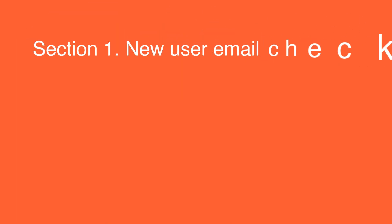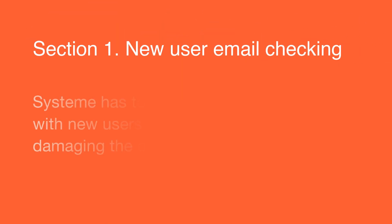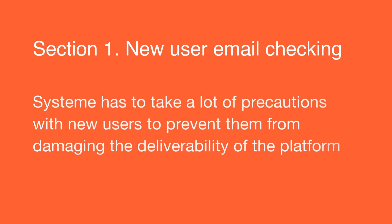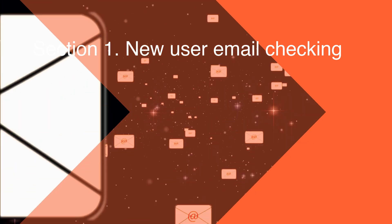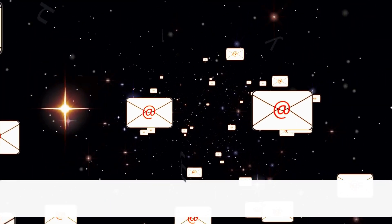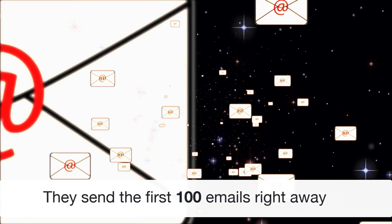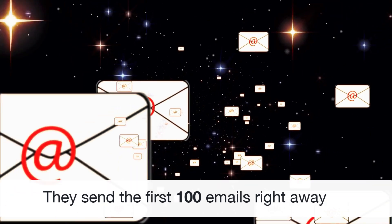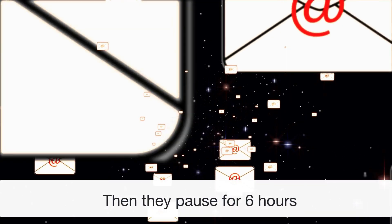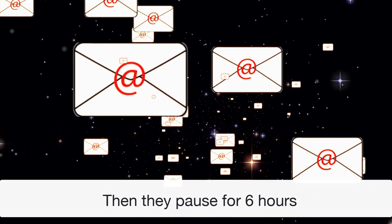Section 1: New User Email Checking. When you're a new user on Systeme.io, some precautions are taken to ensure the platform's deliverability. Here's how it works: we initially send the first 100 emails without any delay. After sending the 100th email, we pause for six hours.